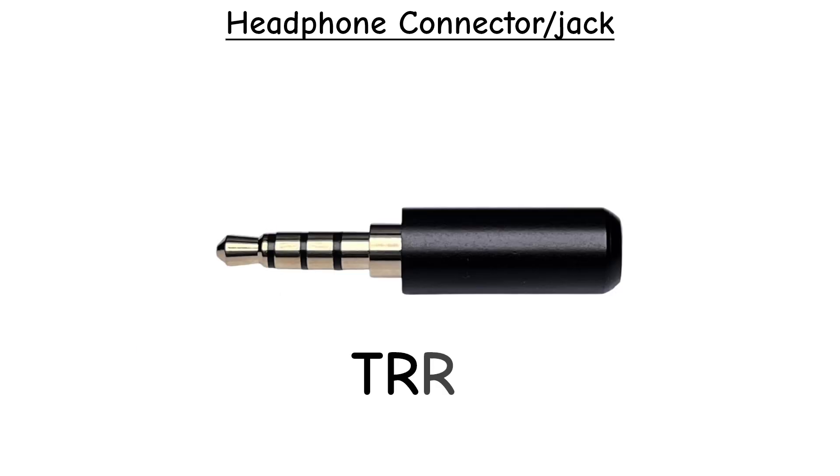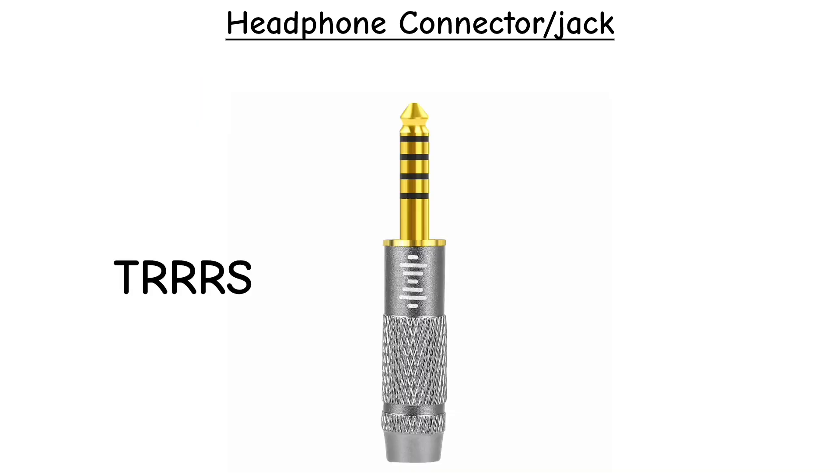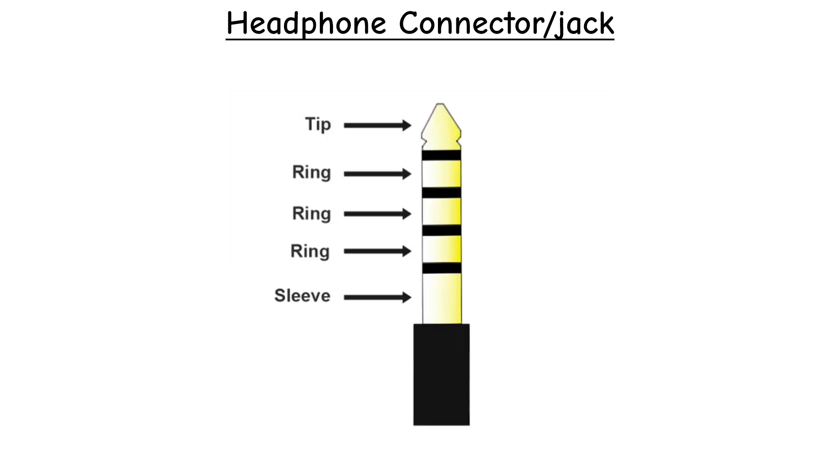Another ring gives TRRS, commonly in 3.5mm and sometimes 2.5mm, which adds a microphone channel for headsets and smartphones. The rare TRRRS version, most often in 2.5mm form and also seen in 4.4mm balanced Pentaconn connectors, provides five conductors.